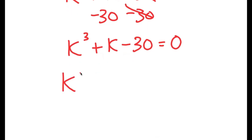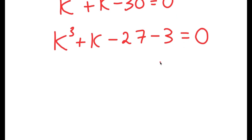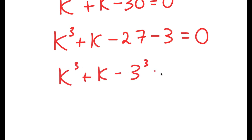Now I'm going to write this as k to the power of 3 plus k minus 27 minus 3 is equal to 0. And 27 is the same thing as 3 to the power of 3. So I get k to the power of 3 plus k minus 3 to the power of 3 minus 3 is equal to 0.